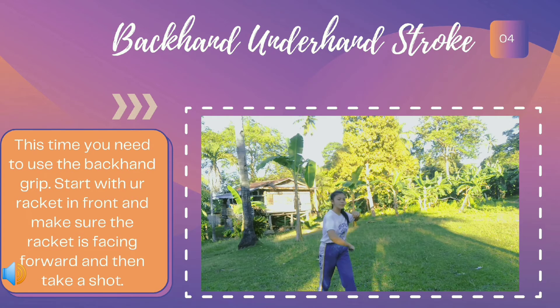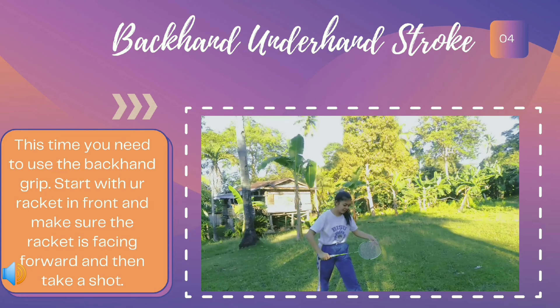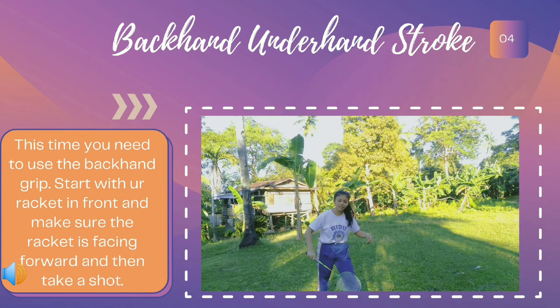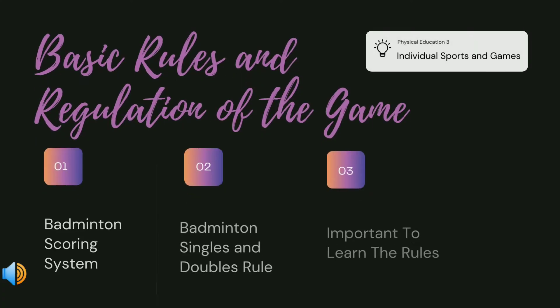Next is the backhand underhand stroke. This time you need to use the backhand grip, start with your racket in front, make sure the racket is facing forward, and then take a shot.